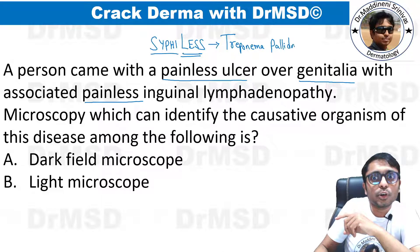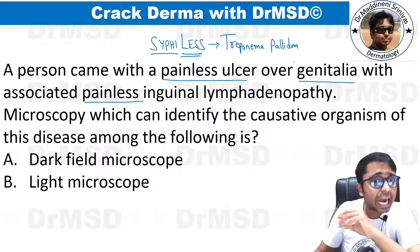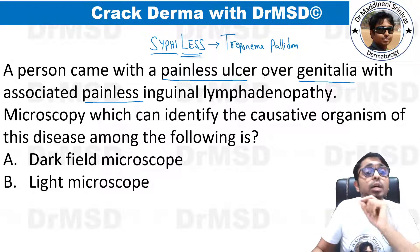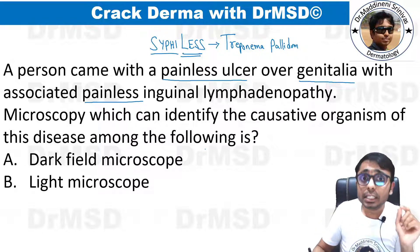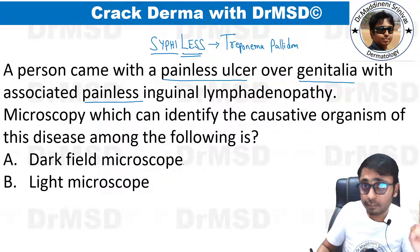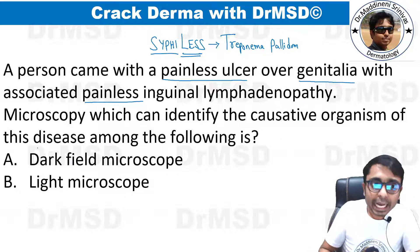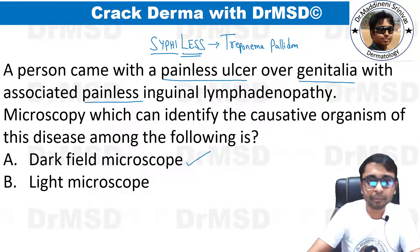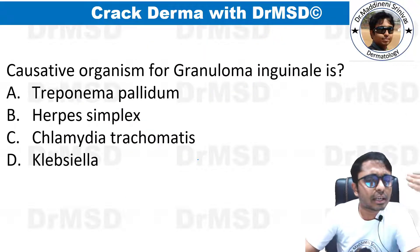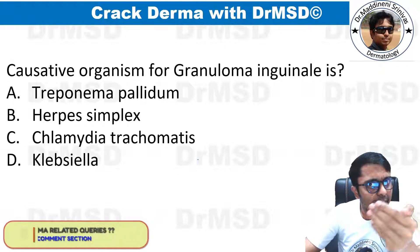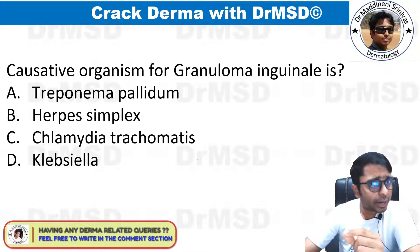Treponema pallidum is a spirochete and cannot be easily observed under a regular microscope, so we need a special microscope. It is called a dark field microscope. The answer here is option A: dark field microscope.